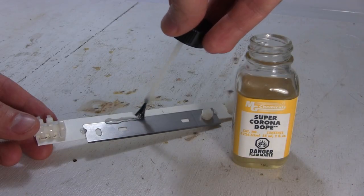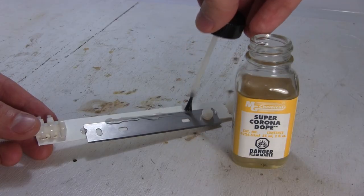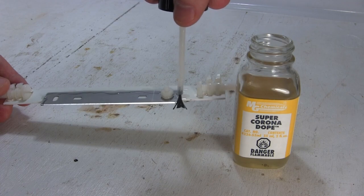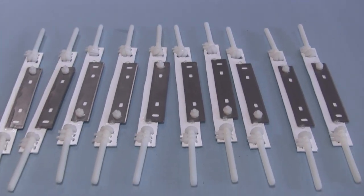Lastly, I coat all edges except for the sharp one with corona dope to minimize losses in those directions. That includes all the corners. And here are all 10 finished electrodes.